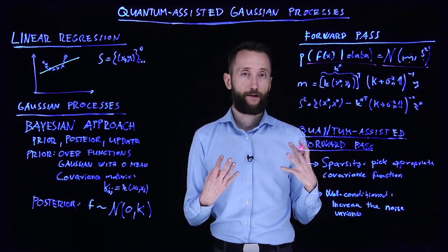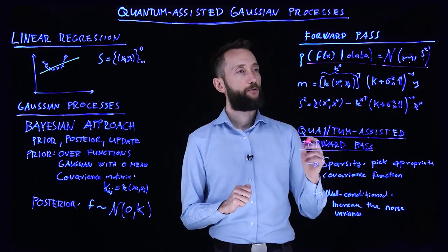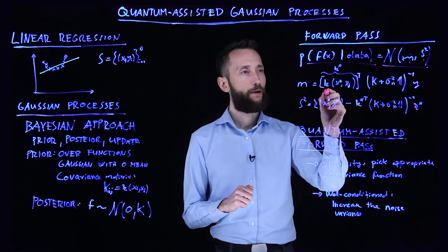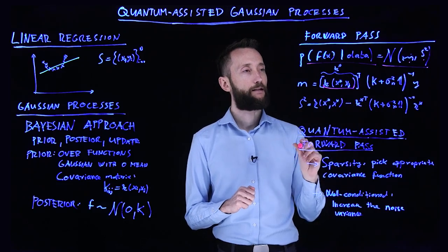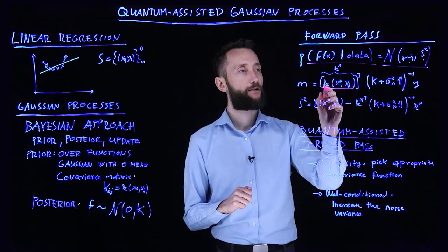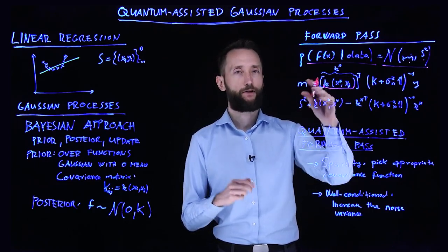And this has some mean m and some s-squared variance. And this is where calculations start to become important. So first of all, let me define a vector. So we take these elements—this is the kernel function of this x asterisk point with all the data points j, so we create a vector of that.